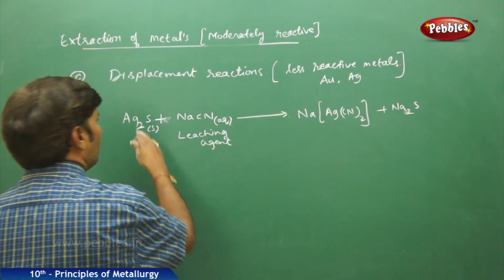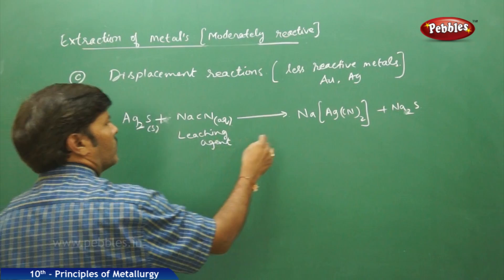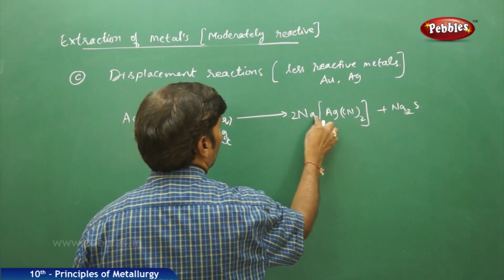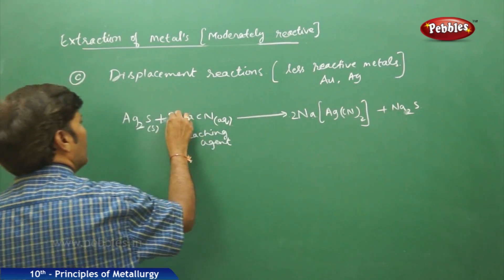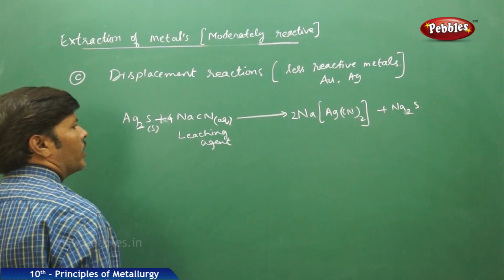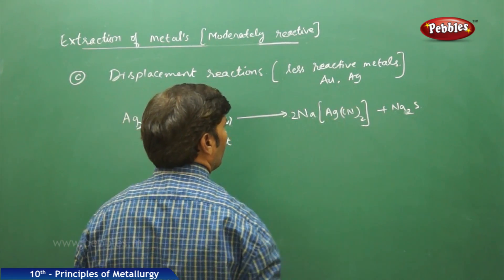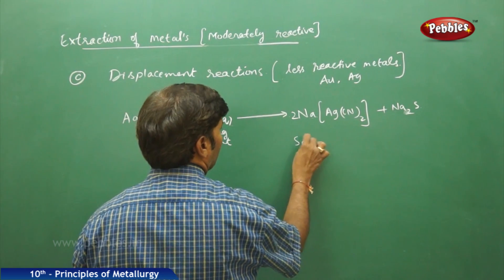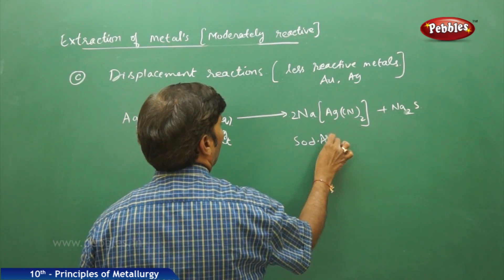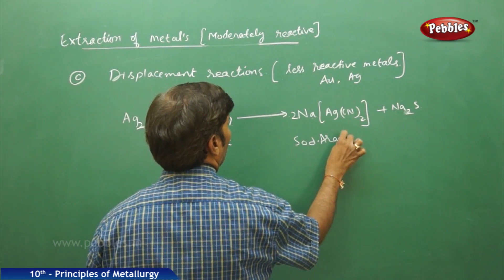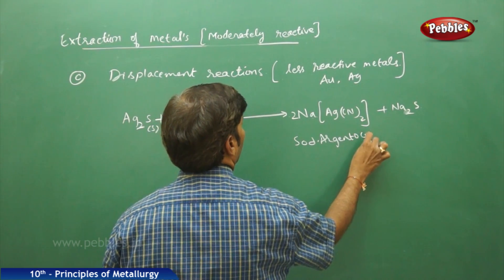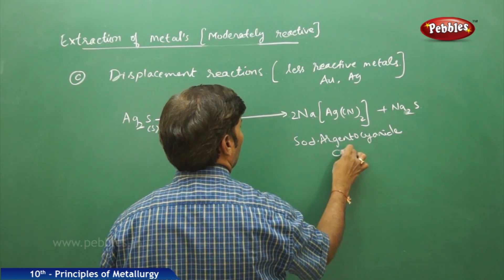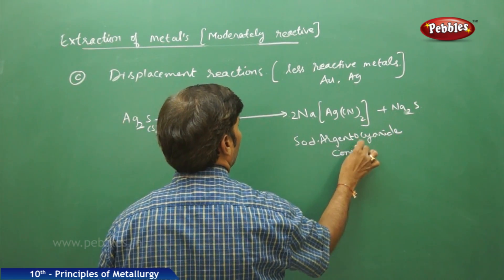To balance the equation: there are 2 silvers, so take 2 NaCN on that side; 2 sodiums and 2 sodiums give 4 sodiums total, so take 4 NaCN. With 4 cyanides, the reaction is balanced. This product is called sodium argento cyanide complex.